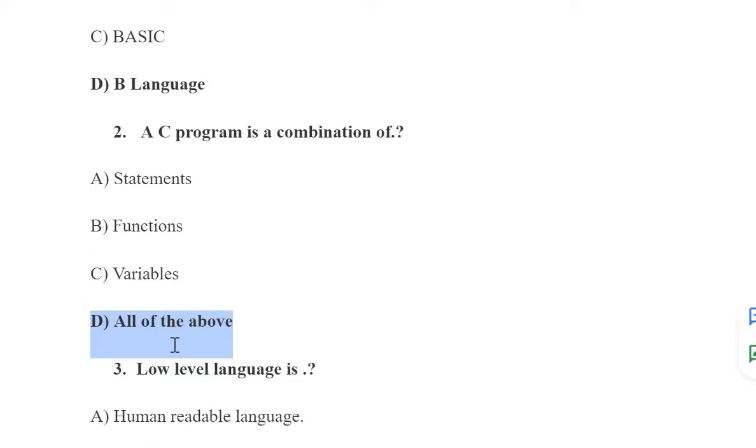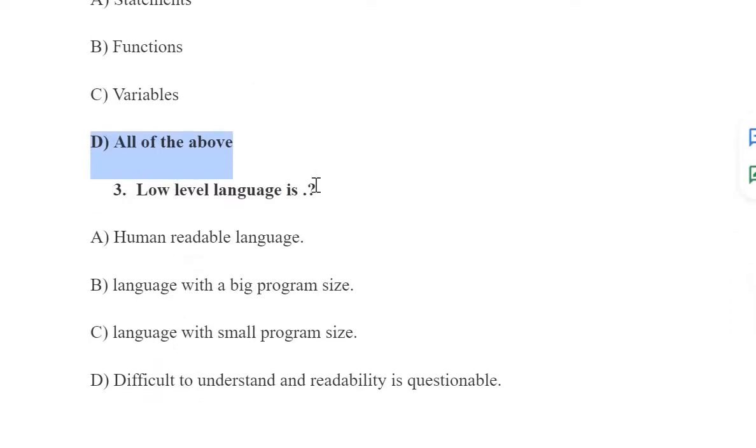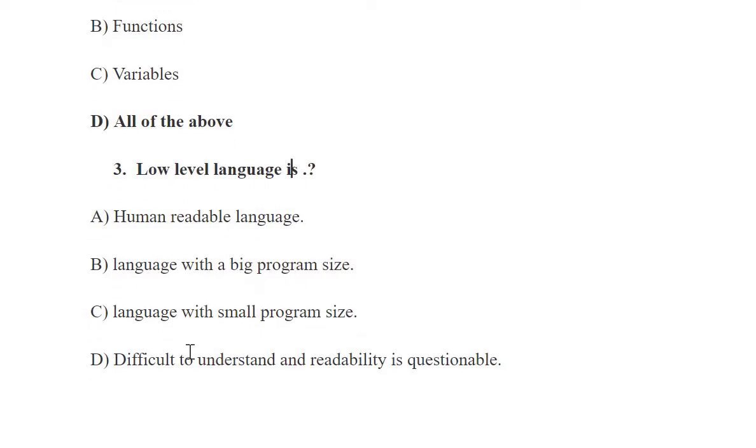Next is: Low level language is what? Low level language means machine level language. As we discussed in previous videos, machine level languages are not in human readable form, they are in the form of zeros and ones. The options are human readable language, language with a big program size, language with a small program size, and difficult to understand where readability is questionable. Option D is the correct answer.